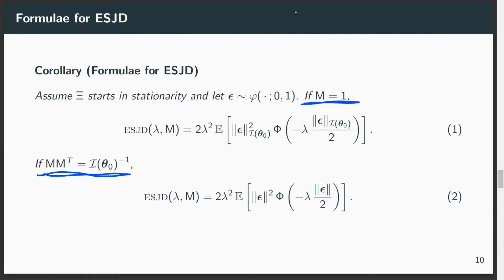Just to point out the difference: if we completely match the target covariance, then we will get Euclidean norms here. But if we do not match the posterior covariance, well, then we need to take into account the information geometry of the target in the algorithm, and we need to take it into account in the expected squared jumping distance.